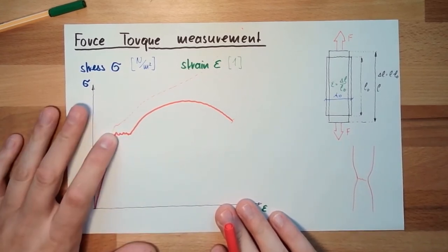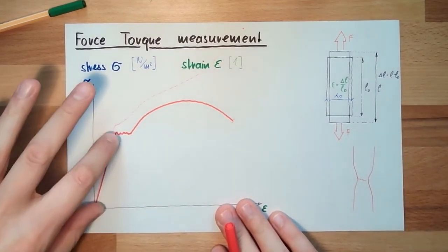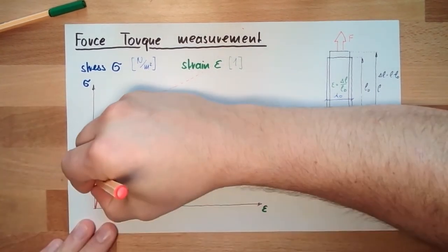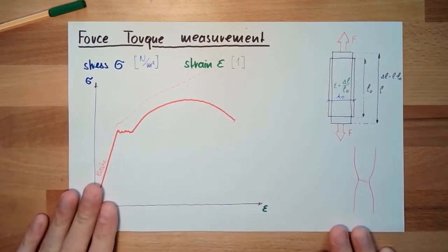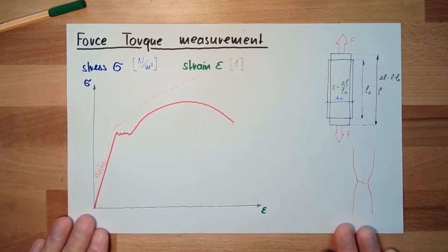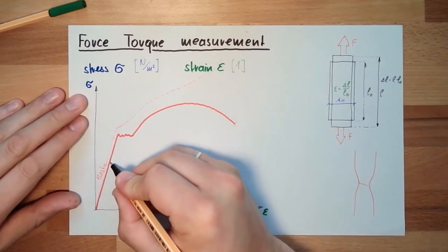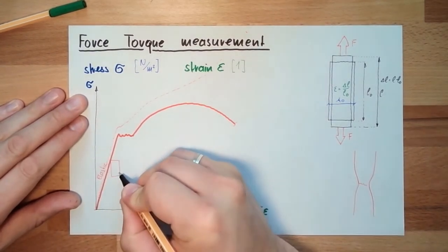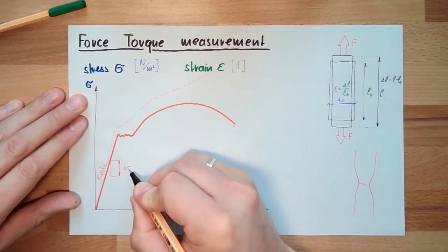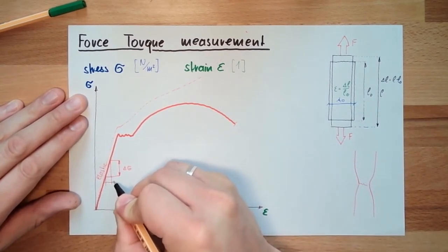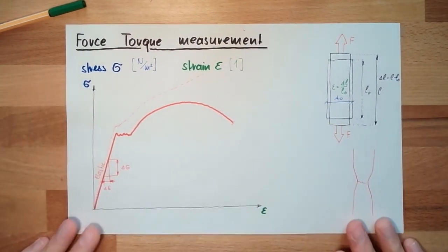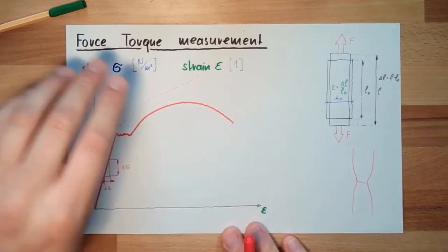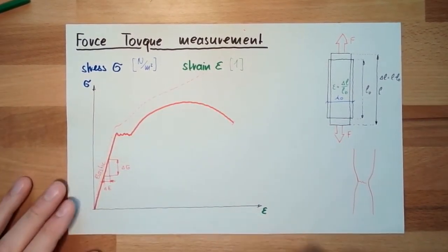This is what's happening here. But we should never get here. We should always stay here in this elastic area. And this elastic area is described by Hooke's law. There is a certain change of stress resulting in a certain change of strain. And this is linear. For many materials, this is linear.